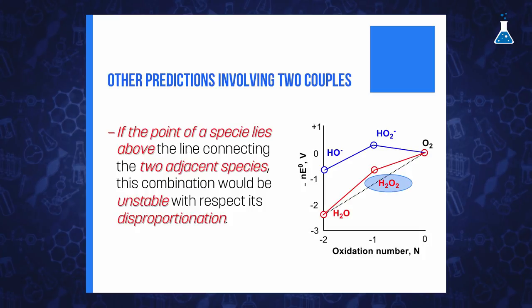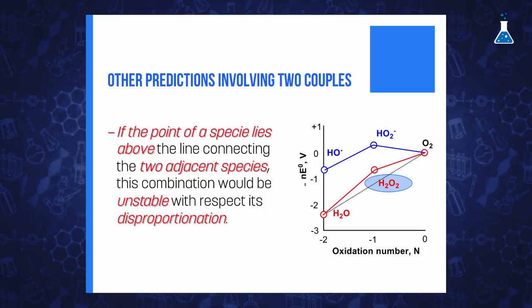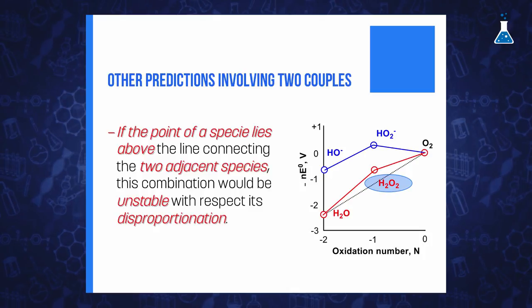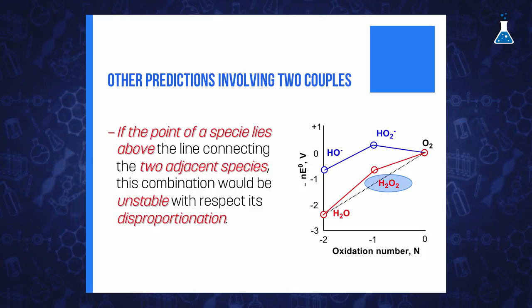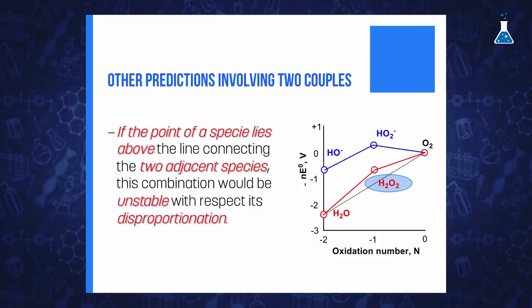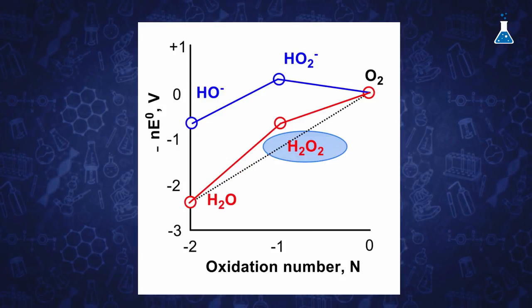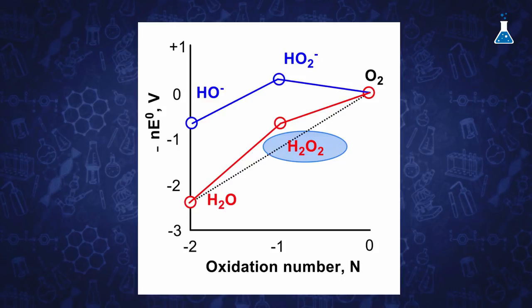We can also do other predictions when we consider reactions involving two couples. If the point of a species lies above the line connecting the two adjacent species, we can deduce that this combination will be unstable with respect to disproportionation. For example, in our oxygen diagram, hydrogen peroxide is in such condition.